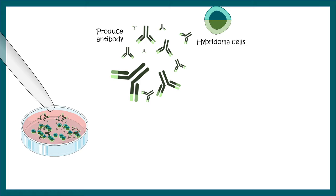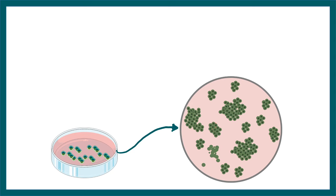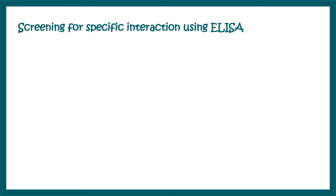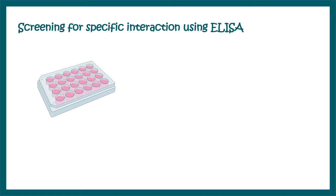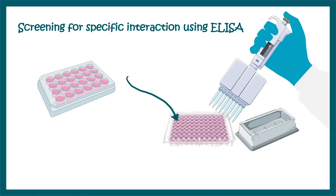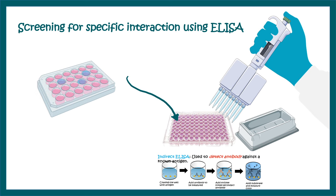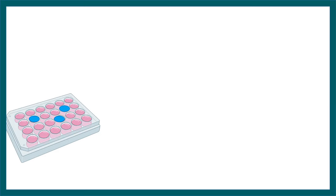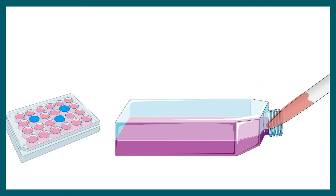After obtaining hybridoma cells, we need to screen for the specificity of the antibodies they produce. Colonies of hybridoma cells are picked up and each clone is cultured in a multi-well plate. The fluids from each well are screened for antibody specificity using ELISA, Western blot, or immunofluorescence. If two or three wells show specific monoclonal antibody production, those cells are cultured in bulk in a large flask to produce large quantities of the antibody of interest.